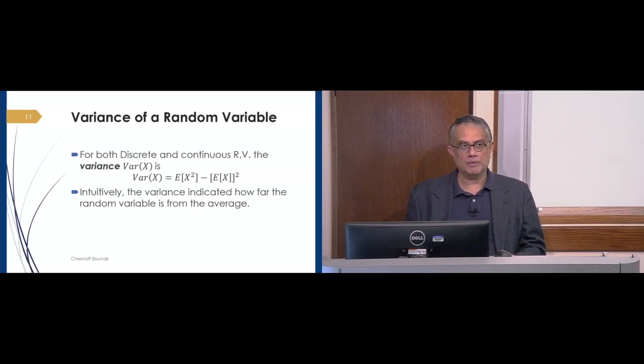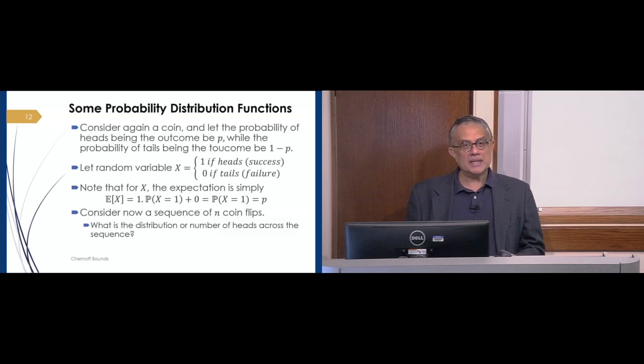So, now, using this notion of a random variable and its basic definition, we can talk about different types of properties of this random variable. The most basic property that we need to talk about is the concept of a probability distribution.